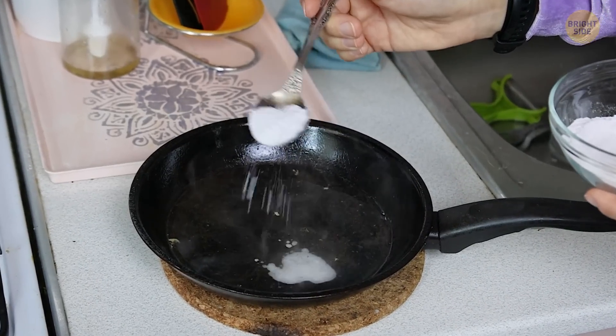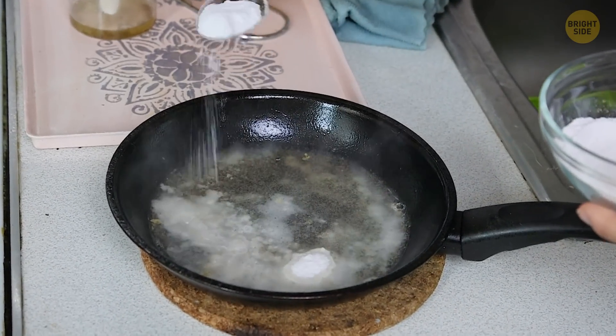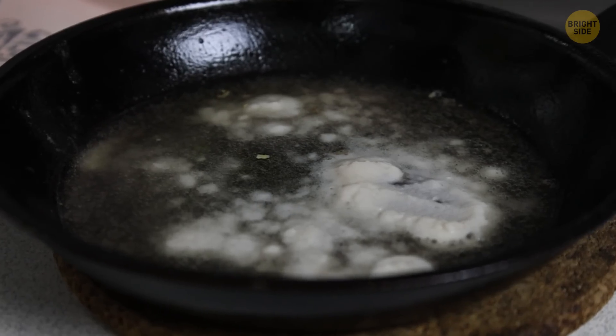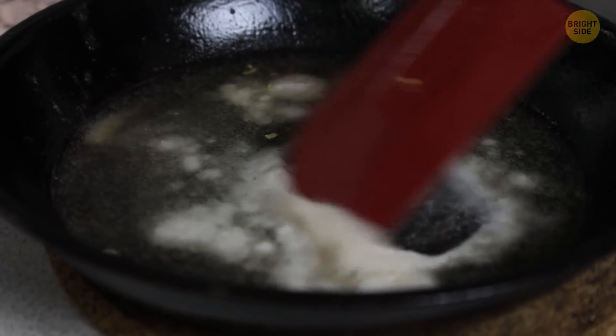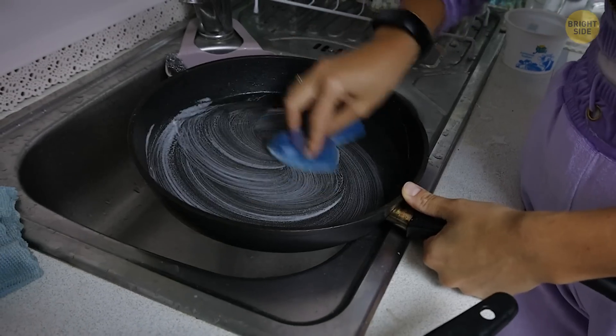Sprinkle baking soda on the base, covering the burnt parts. A couple of teaspoons should be enough to form a slurry. Watch and wait as the soda fizzes, continue to move the pan around to ensure you cover the scorched areas. Once the fizzing stops, you're free to scrub away.